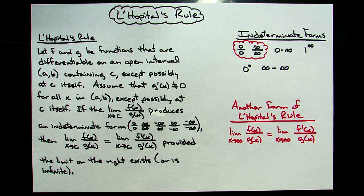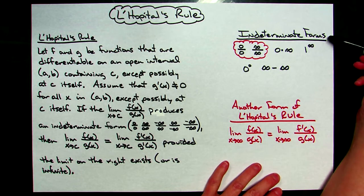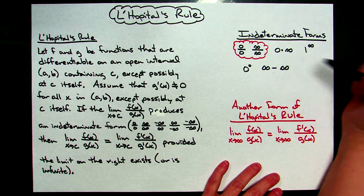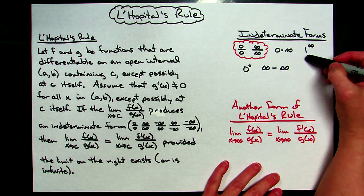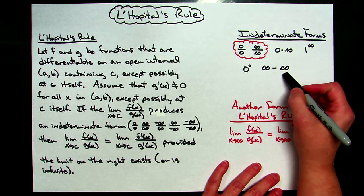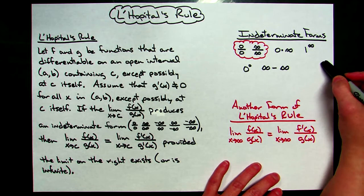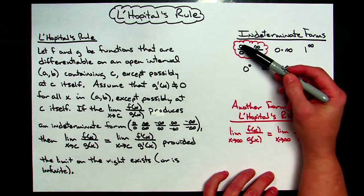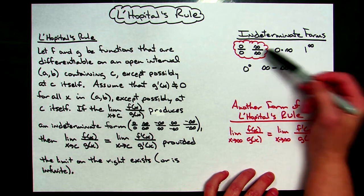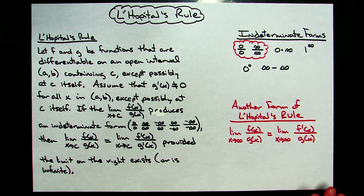Today we're going to take a look at L'Hôpital's Rule. Before we do this, we need to go back and re-talk about some of our indeterminate forms. We have worked a lot with 0 over 0 and infinity over infinity as indeterminate forms. There are other ones, like 0 times infinity, 1 raised to the infinity, 0 raised to the 0, and infinity minus infinity. All of those are indeterminate forms, but the ones we're going to focus on for L'Hôpital's Rule are when we have a quotient.